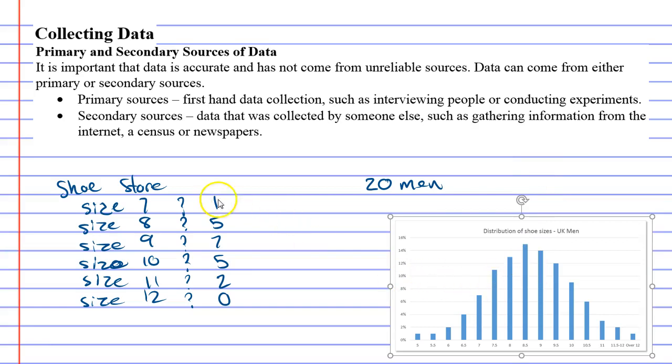The primary source of data is usually the most accurate because with primary sources you know where the data came from, you know that it's reliable because you actually collected it yourself. But primary sources take a long time and they can be costly as well.